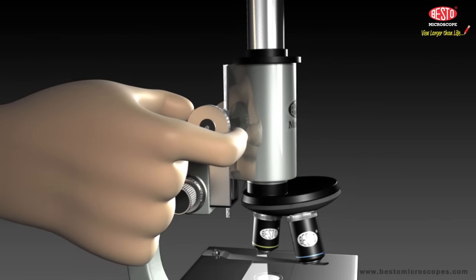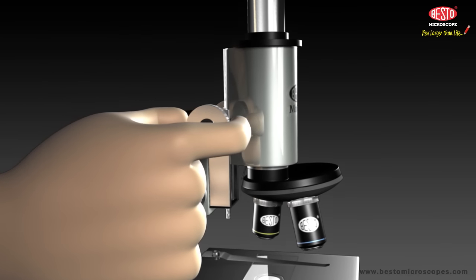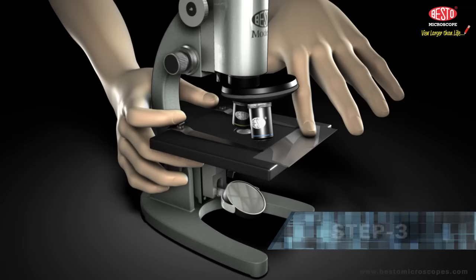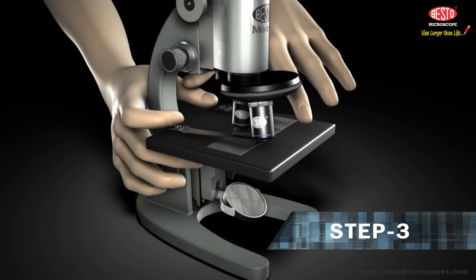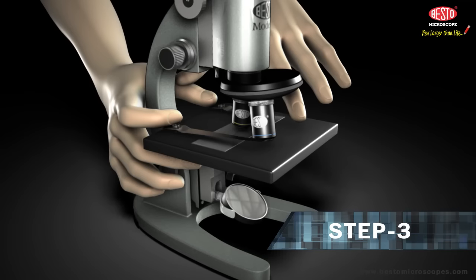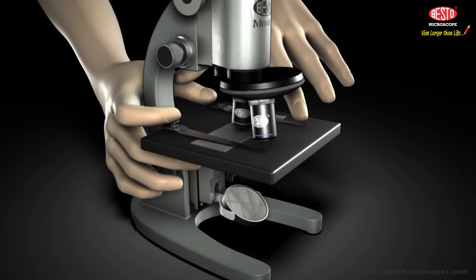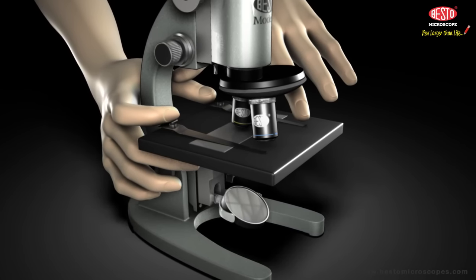Step 3: Put the slide on the stage so that the center, the bit you want to look at, is over the hole and under the lens. Use the stage clips to hold the slide in place.